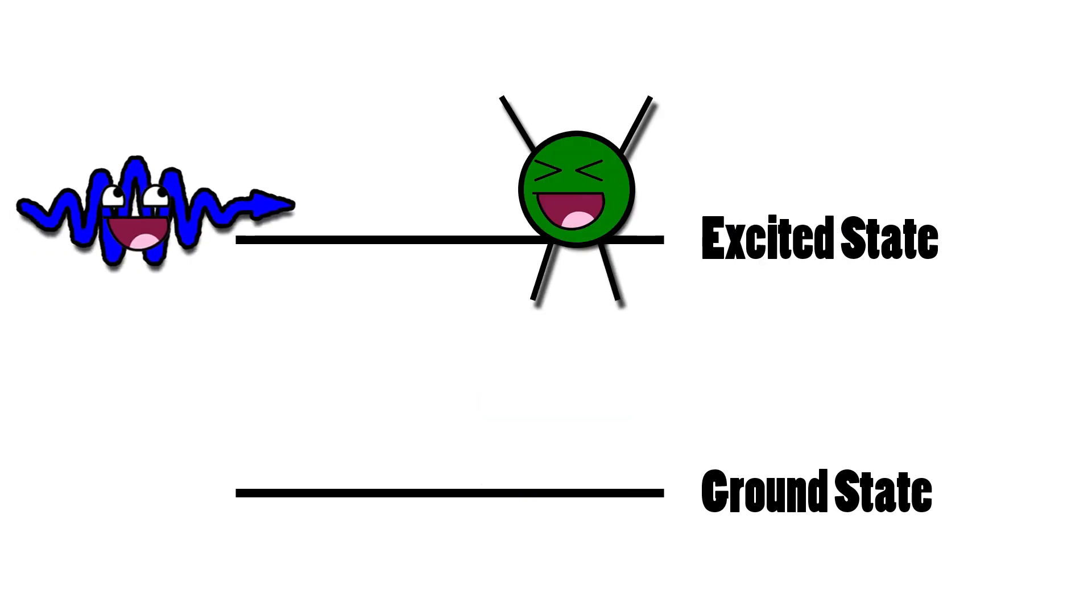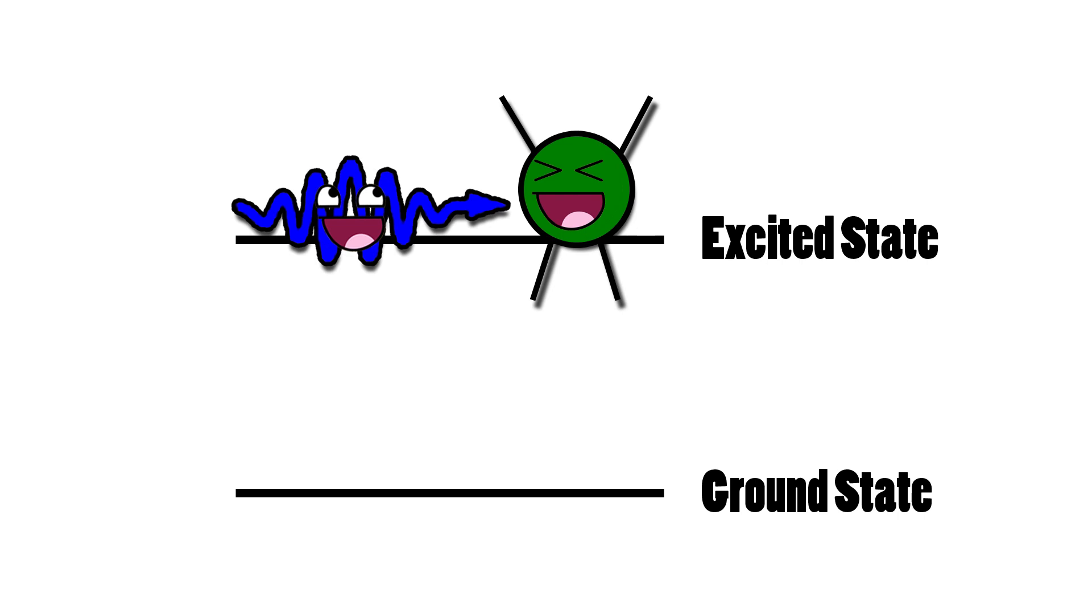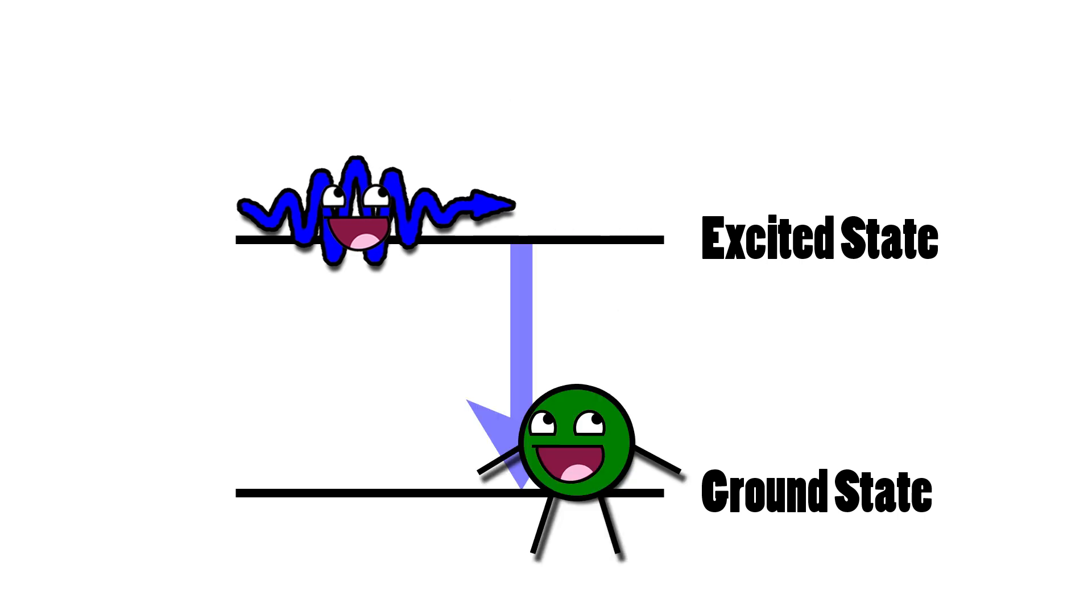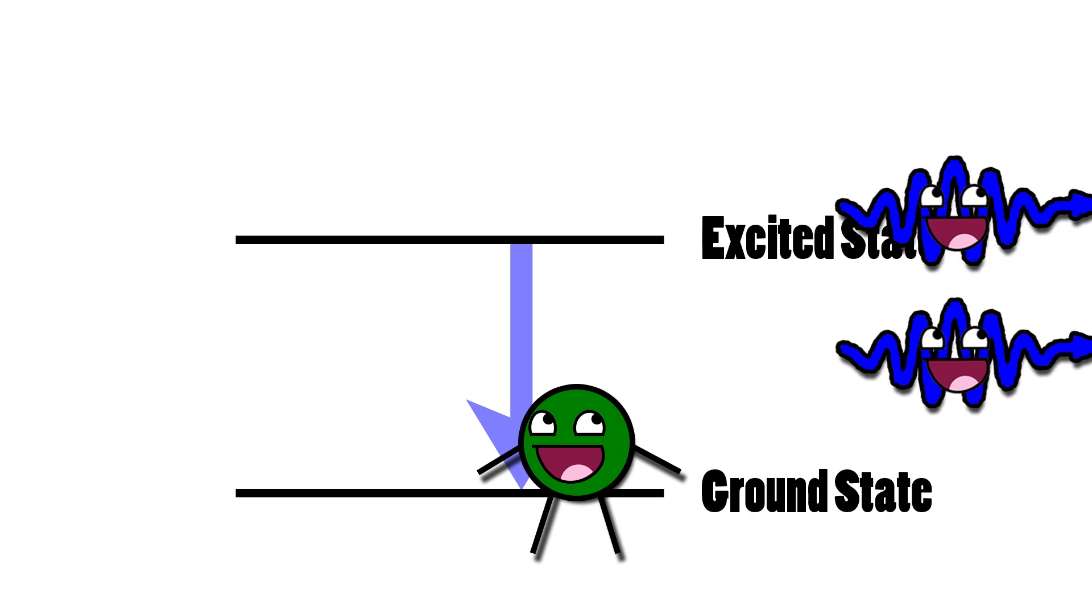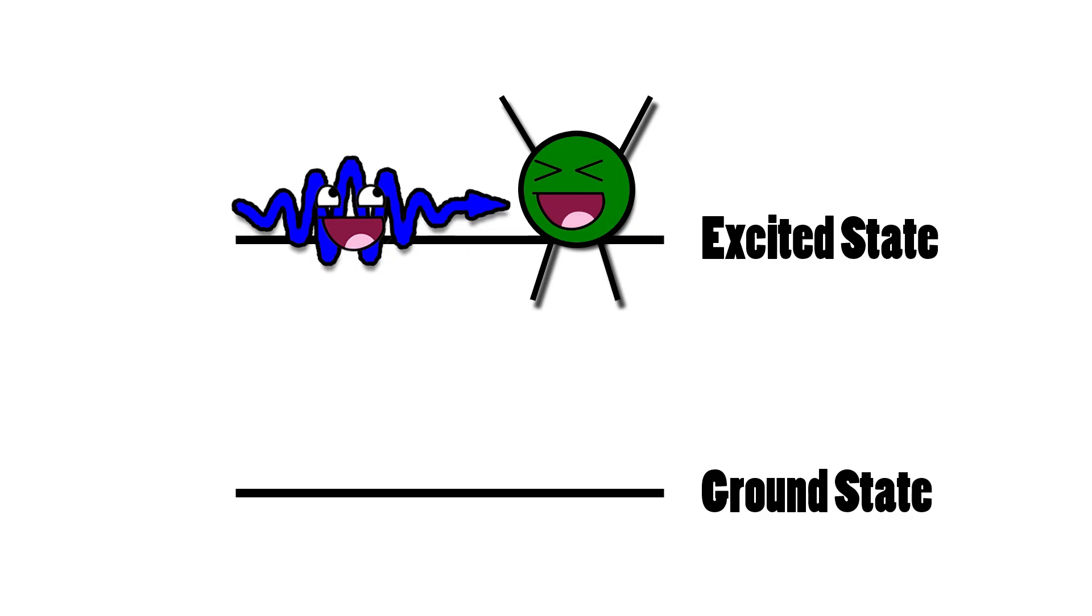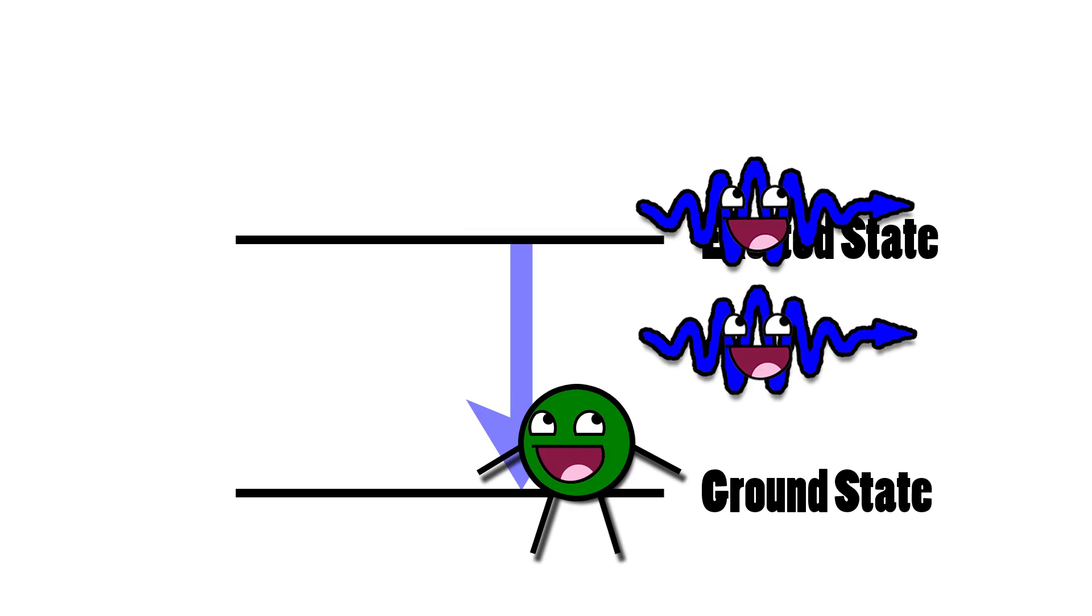Now if this photon runs into another electron in an excited state at the exact same energy level, it will drop down to the ground state, release a photon of the same color, in phase going the same direction. And this is stimulated emission. A photon that causes an atom to emit a second identical photon.